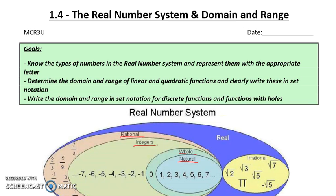Today we're going to have three goals. The first goal is we want to know the types of numbers in the real number system and represent them with an appropriate letter. The second goal is we want to determine the domain and range of linear and quadratic functions and clearly write these in set notation.